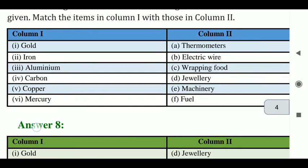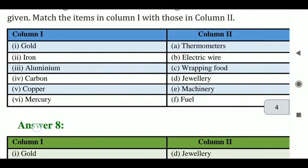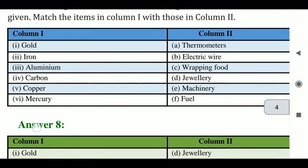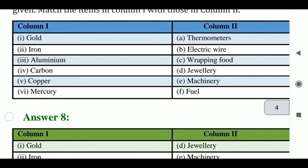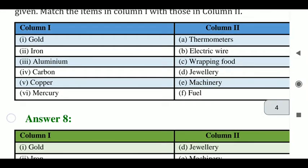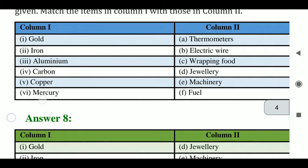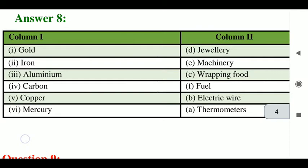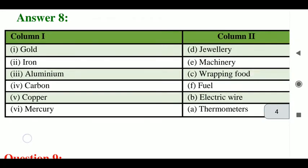Aluminum (Al) foils are used for food wrapping, so aluminum matches to food wrapping. Aluminum also has wires, but here the better match is food wrapping. Copper is the best conductor for electric wires. Carbon is used as fuel. Mercury is used in thermometers. So: gold → jewelry, aluminum → food wrapping, copper → electric wire, carbon → fuel, mercury → thermometer.